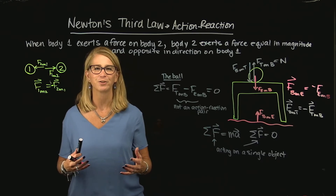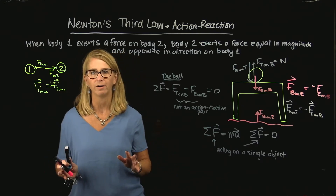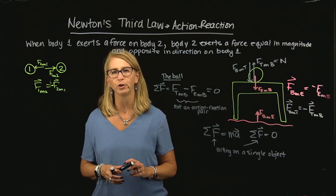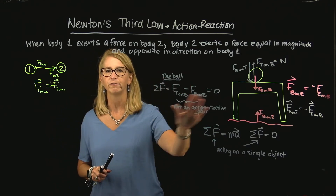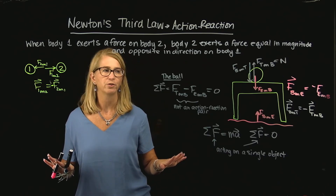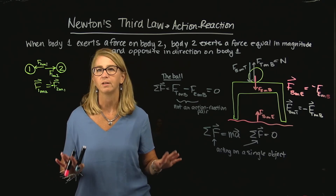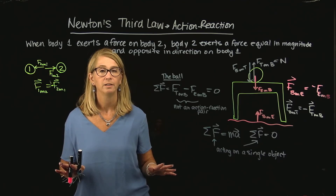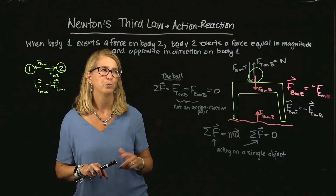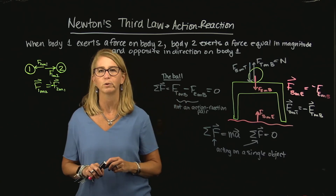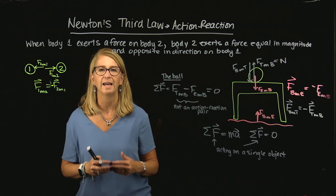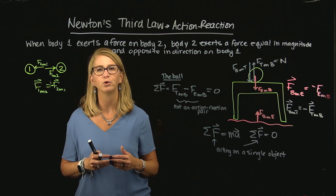An action-reaction pair is very straightforward — the ball pushes on the table, the table pushes on the ball. That's not what's going on here. We have one force that the table is exerting on the ball and another force that the earth is exerting on the ball. When looking at the forces on the ball, I'm only concerned with forces acting on the ball — the action-reaction pairs to those forces don't come into play right now. When we focus on one single object, we will not include an action-reaction pair because those two forces act on two different objects.